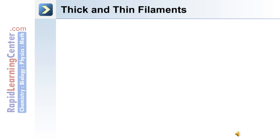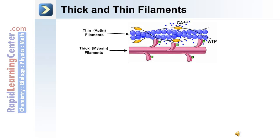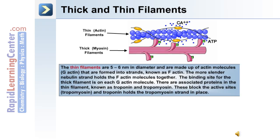Within the sarcomere are the thick and thin filaments. The thin filament is actin and the thick filament is myosin, and each has associated proteins that function during the sliding contraction mechanism. The thin filaments are 5 to 6 nanometers in diameter and made up of actin molecules (G-actin), formed into strands known as F-actin. The more slender nebulin holds the F-actin molecules together. The binding site for the thick filament is on each G-actin molecule. Associated proteins in the thin filament include troponin and tropomyosin; tropomyosin blocks the active site and troponin holds the tropomyosin strand in place.